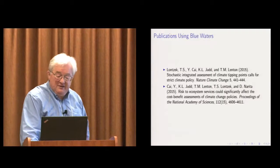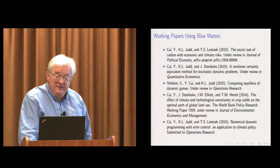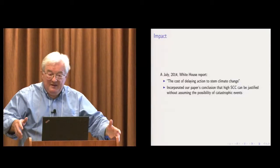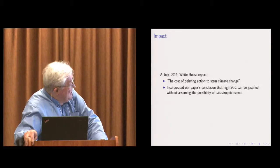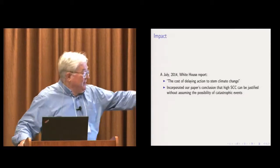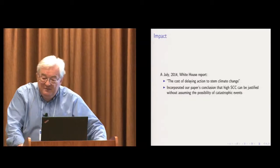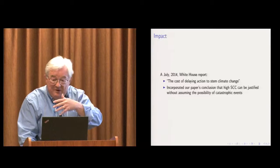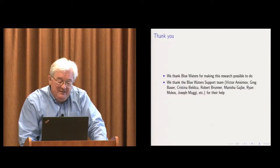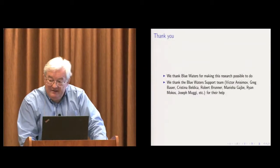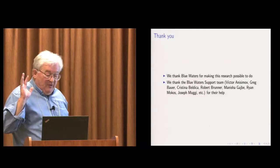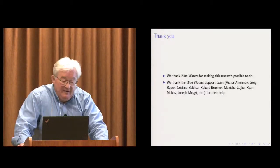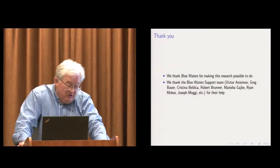We've had a couple of papers recently — one in Nature Climate Change and another in Proceedings of the National Academy. We have a variety of working papers. Blue Waters always asks for impact in their reports: a White House report a year ago incorporated our conclusions into its text. That's an impact. We're going to do many extensions — multiple sectors — this is just the beginning. This work is highly parallelizable. Thanks to Blue Waters for making this research possible; the support team has been very helpful over the past couple of years.